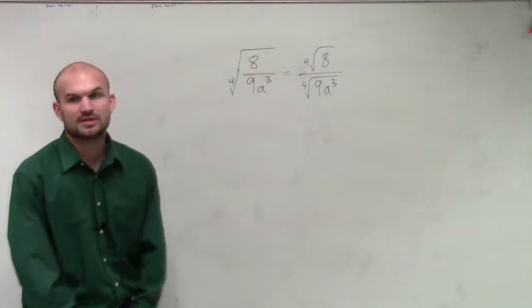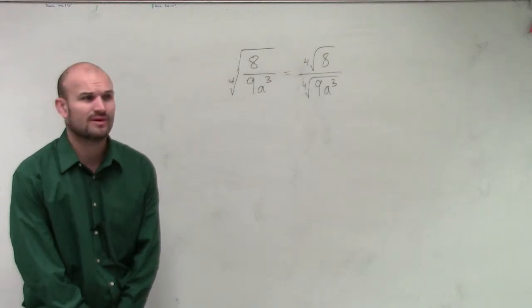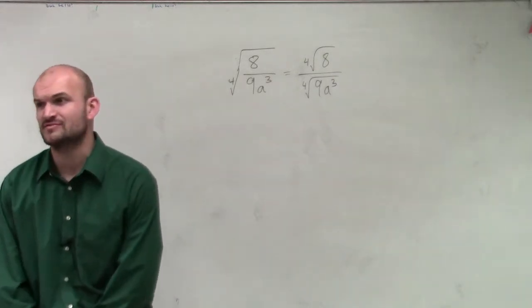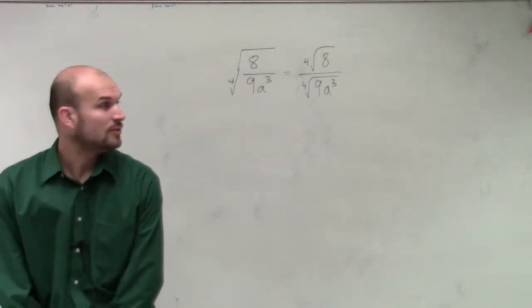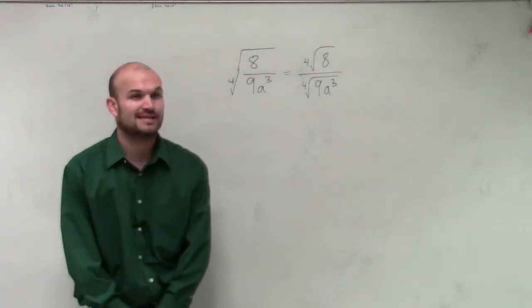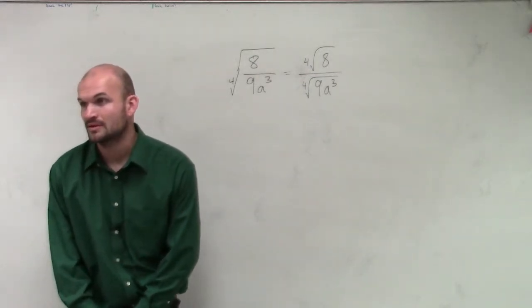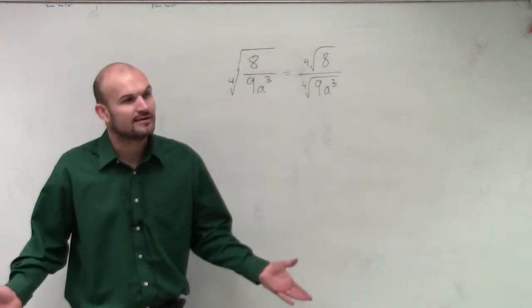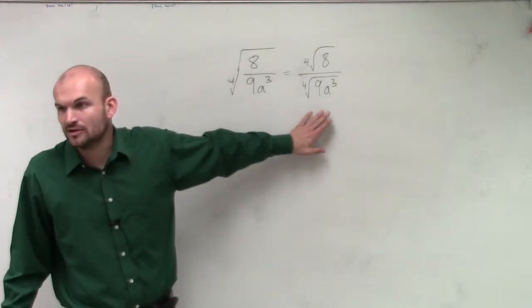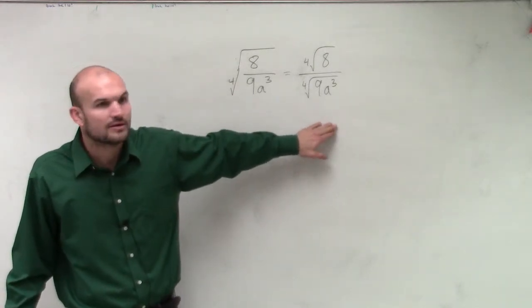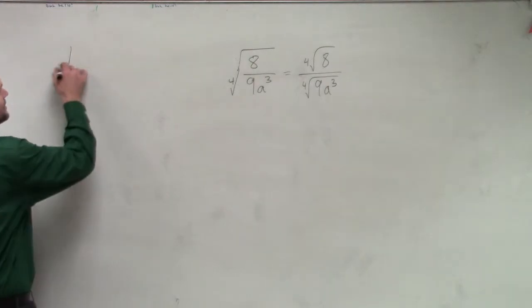Then we try to simplify the 4th root of 9a cubed. Well, what number multiplied by itself 4 times gives you 9? Don't have one. What number multiplied by itself 4 times gives you a cubed? Don't have one, right? So then you could say, all right, well, we're done. But do we ever leave a radical in our denominator? No, right?